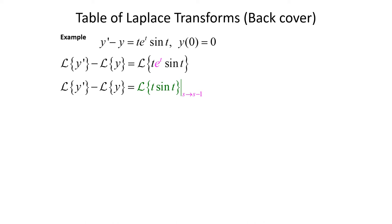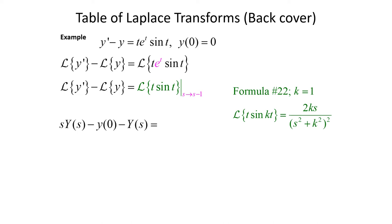Taking our Laplace transforms: y prime gives us s·Y(s) minus y(0), and the Laplace transform of y gives us Y(s). On the right-hand side, for t times sine of t, we can use today's theorem or look at the table of Laplace transforms from the appendix. Our book has formula number 22, which says the Laplace transform of t times sine of kt equals 2ks over (s squared plus k squared) squared.